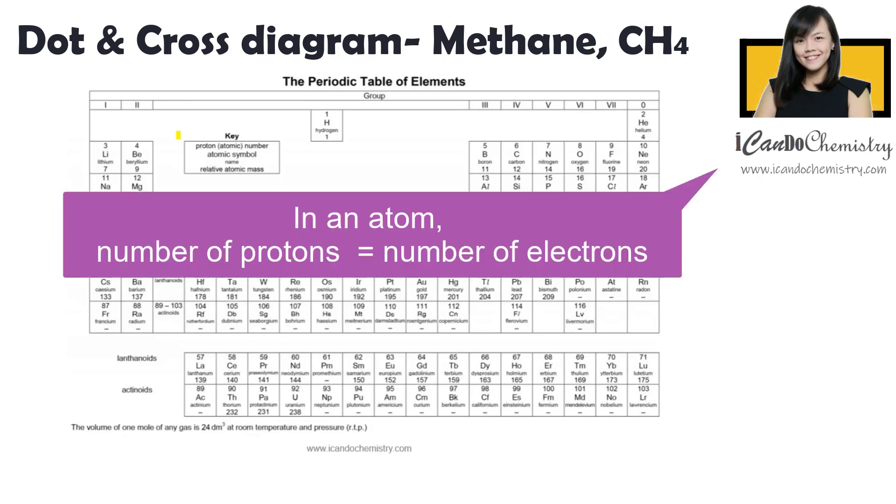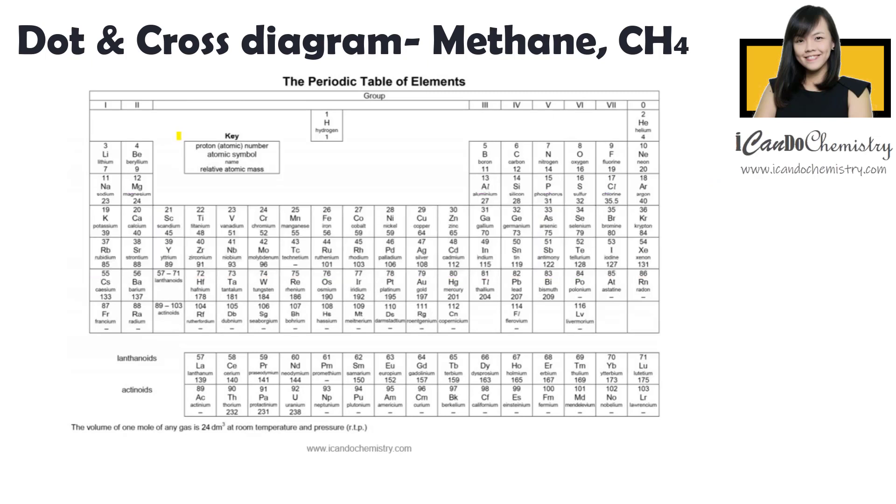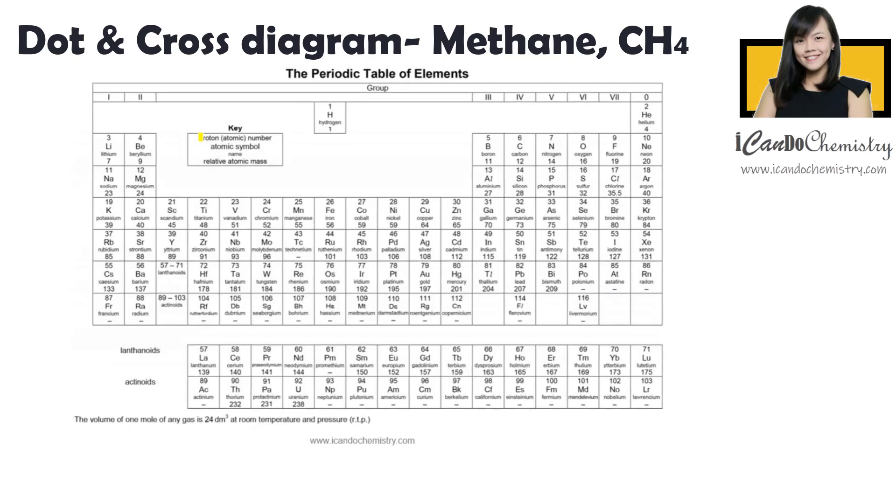Back to atomic structure: in an atom, the number of protons and electrons must be the same. In the periodic table that you have in the exam, you can refer to the key to know what each number represents. The top number is the proton number or atomic number, which means it is the number of protons. In an atom, the number of protons equals the number of electrons, so the top number also represents the number of electrons.